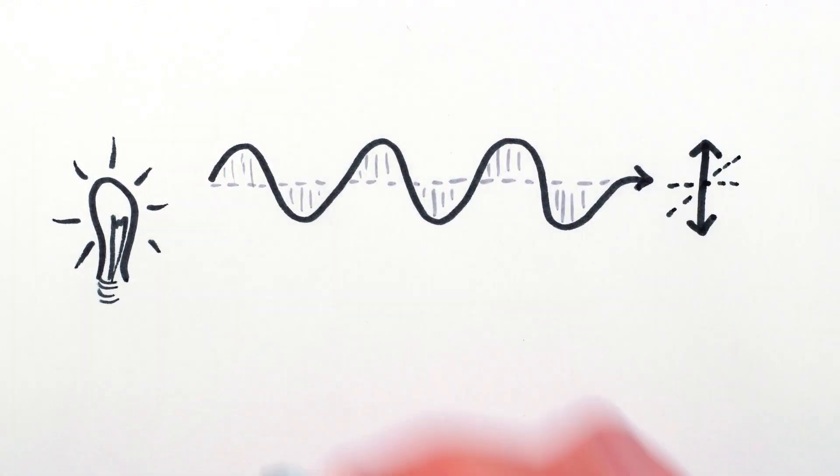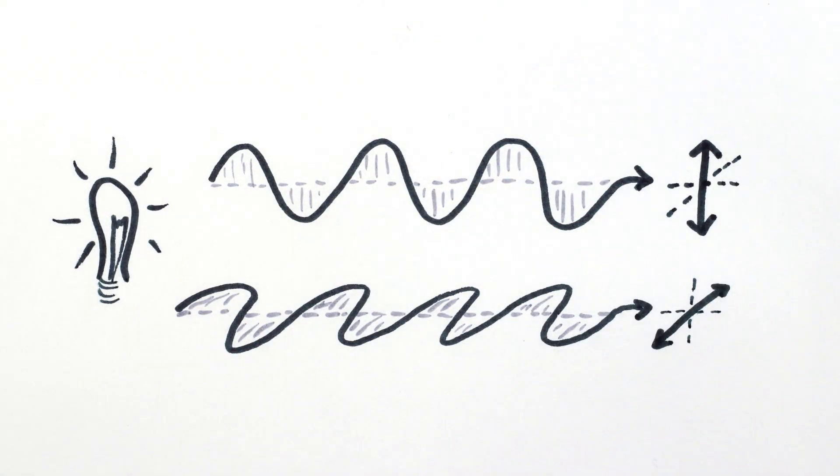Light is a wave, and as it travels, it does its waving along a certain direction. It's polarization.